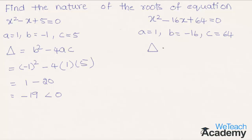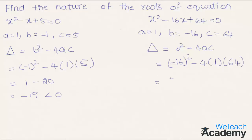Now let us find the value of b squared minus 4ac. By substituting we get minus 16 whole square minus 4 into 1 into 64. Minus 16 whole square is 256, and 4 into 64 is 256. So the value of delta is 0, which means the roots of the equation are real and equal.